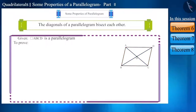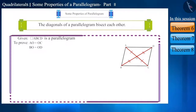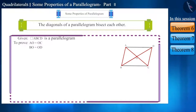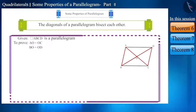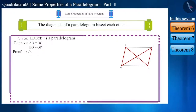Let's try to understand this property. According to the statement, AO should be equal to OC and BO should be equal to OD. Let's prove this. This happens only if both these triangles are congruent to each other. That is, we have to prove that these two triangles are congruent. Let's try to prove that triangle AOB and triangle COD are congruent.